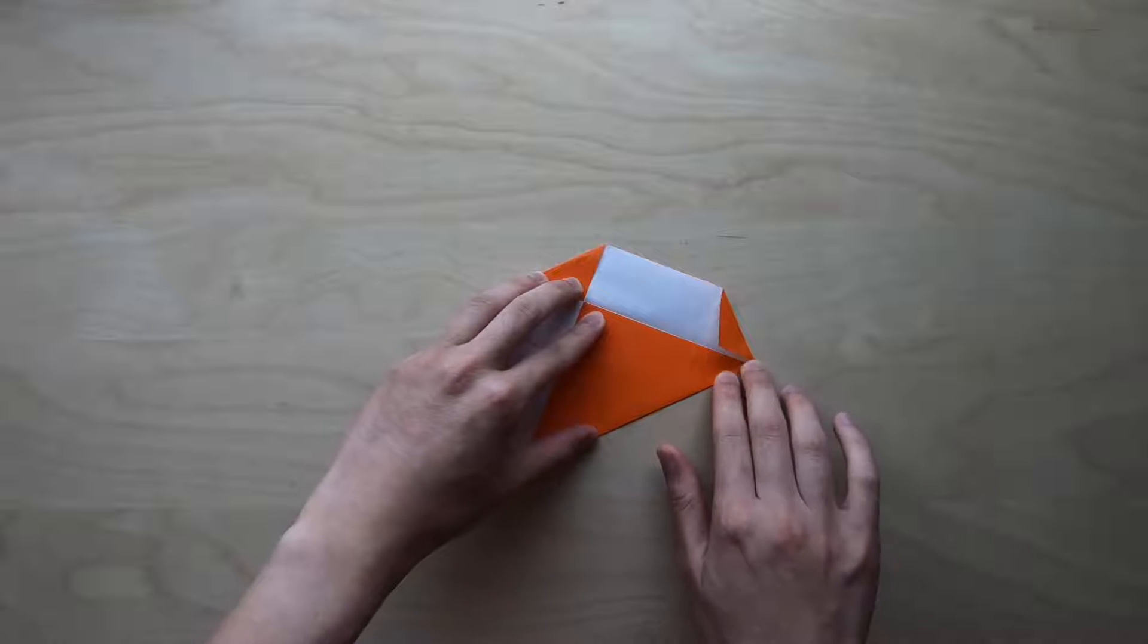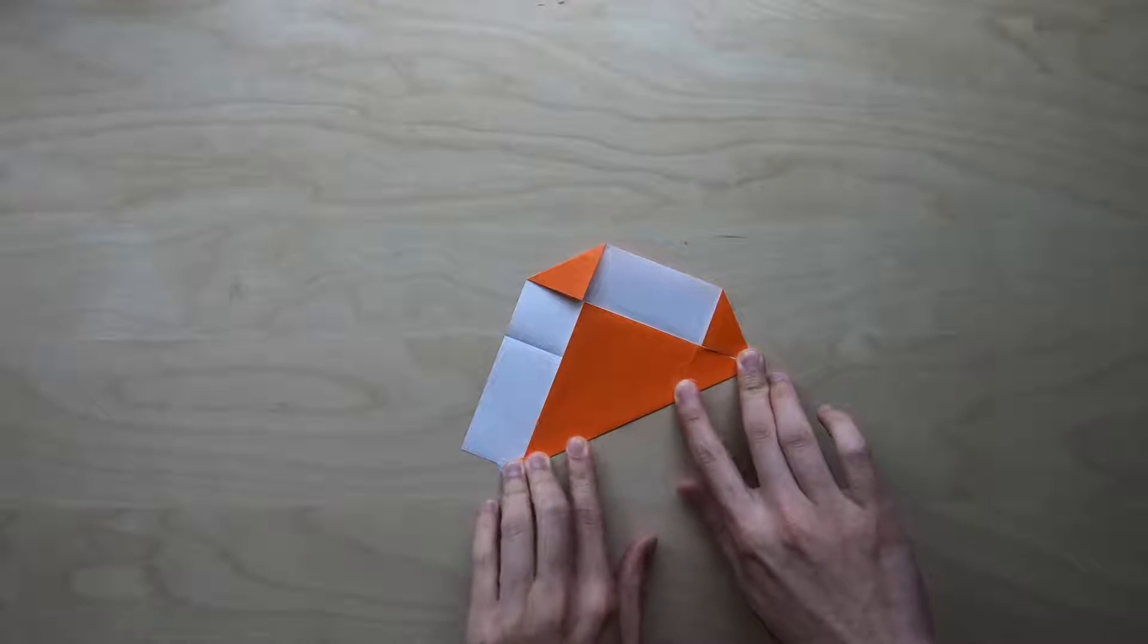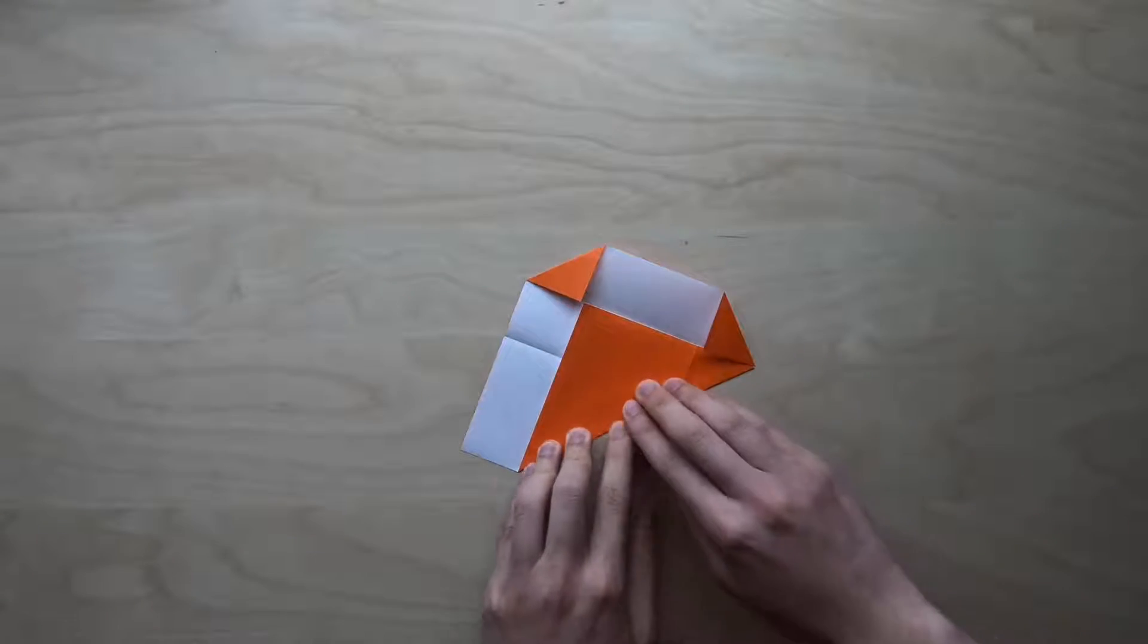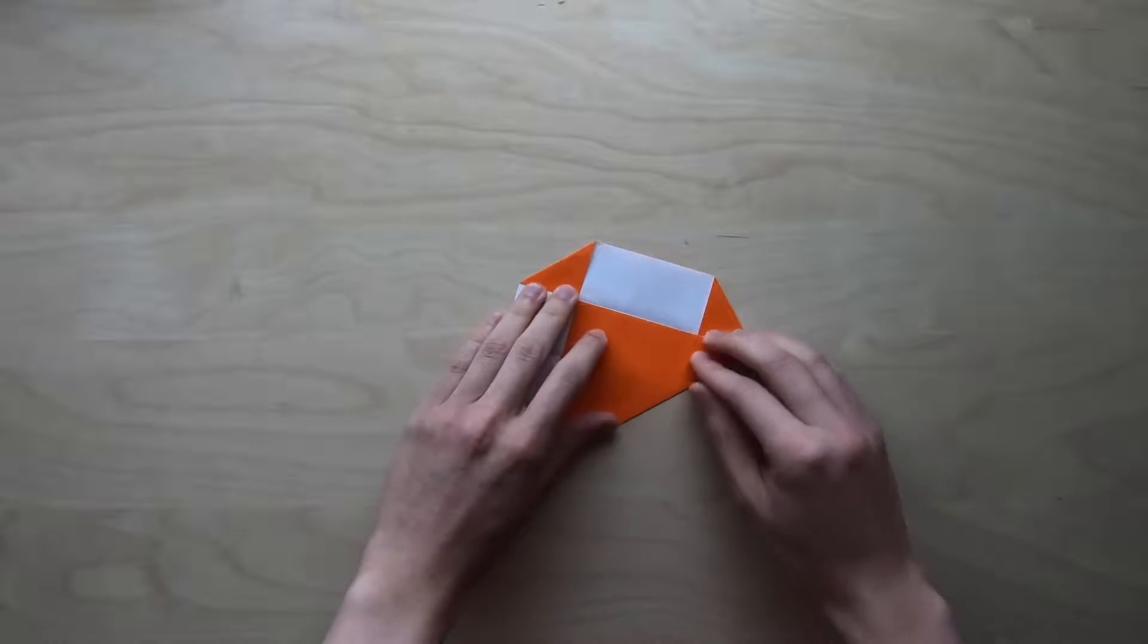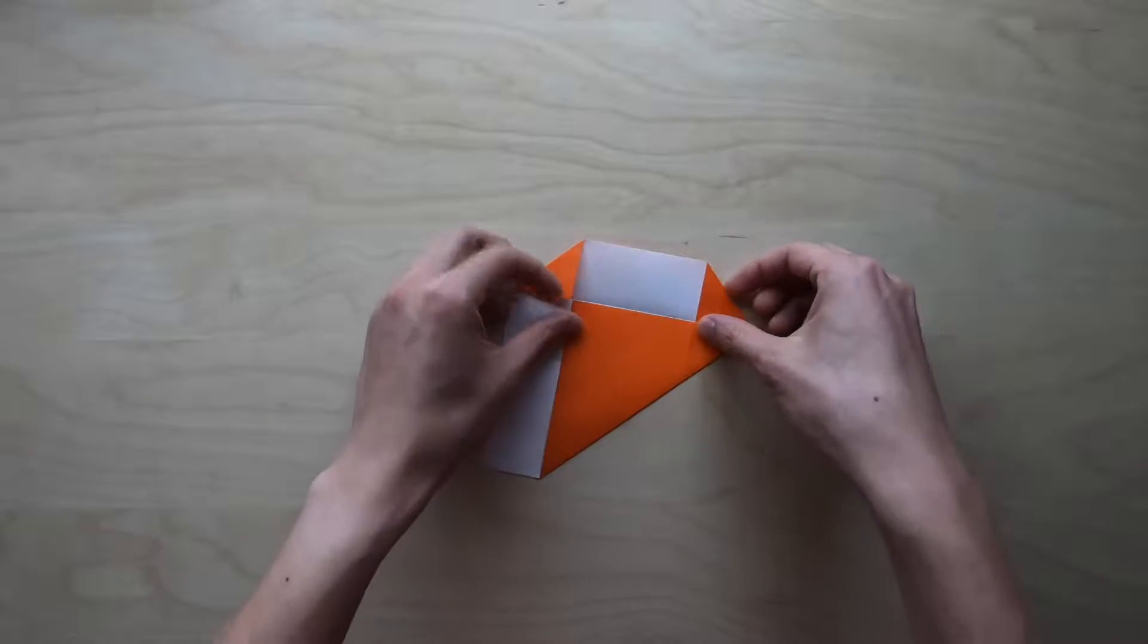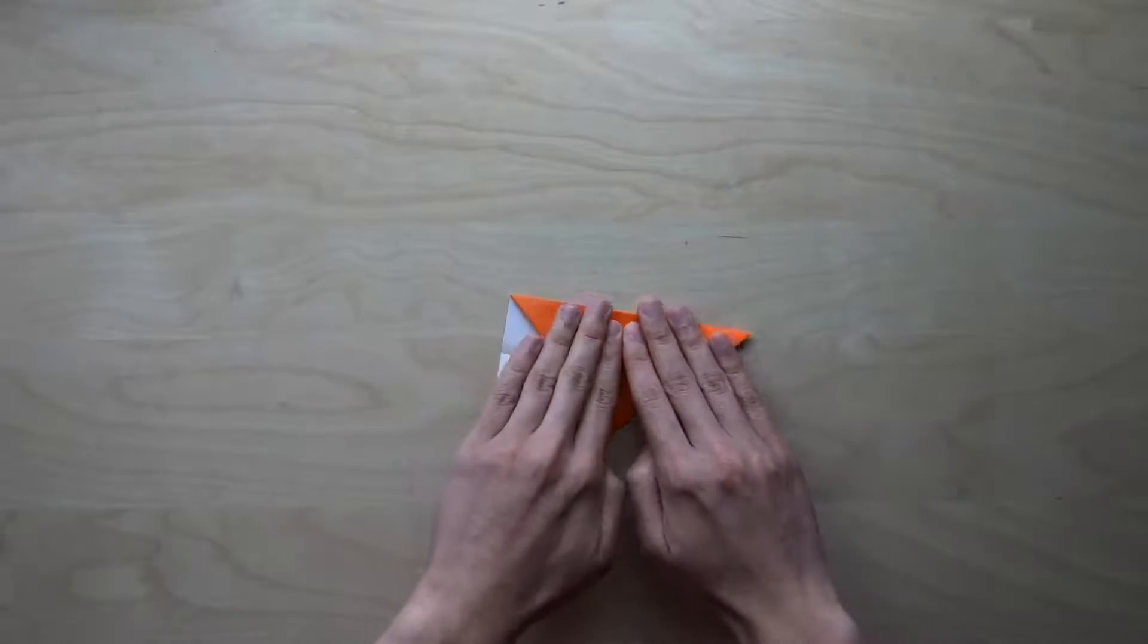Once we do that, now we try to fold this other corner all the way to the end. It doesn't have to be perfect, but just fold them in the right direction.